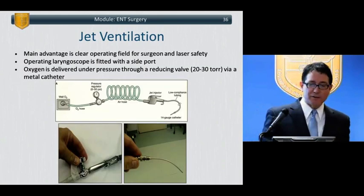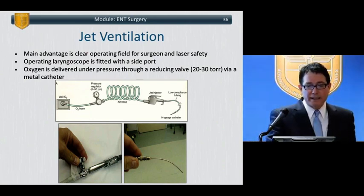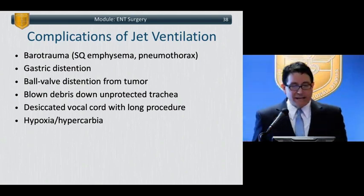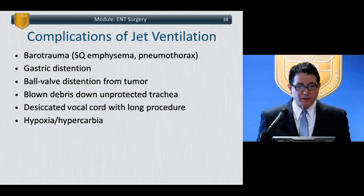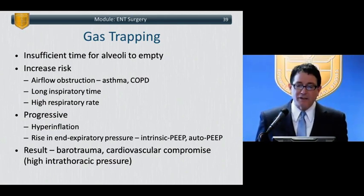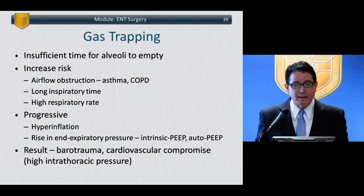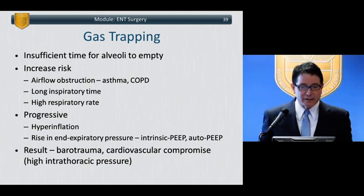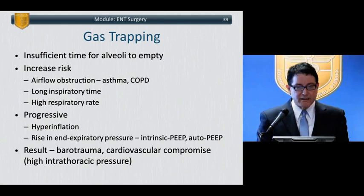Jet ventilation uses an operating laryngoscope fitted with a side port to ventilate the patient, providing a clear operating field. TIVA is required as vaporizers are bypassed. Complications include barotrauma, gastric distension, and gas trapping — where there is insufficient time for alveoli to empty. Patients with asthma or COPD are at increased risk of gas trapping, especially if a long inspiratory time is set with a high respiratory rate, potentially leading to barotrauma and cardiovascular collapse.